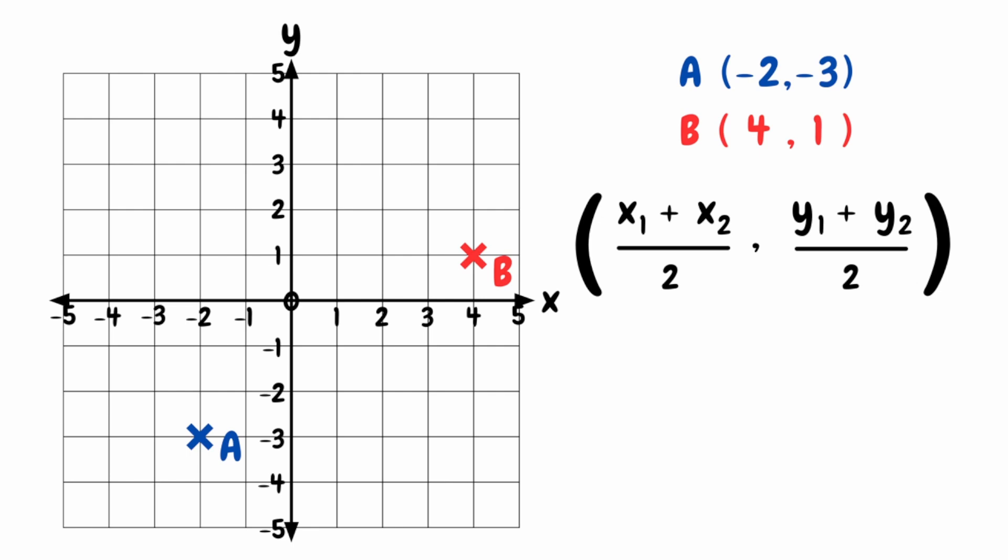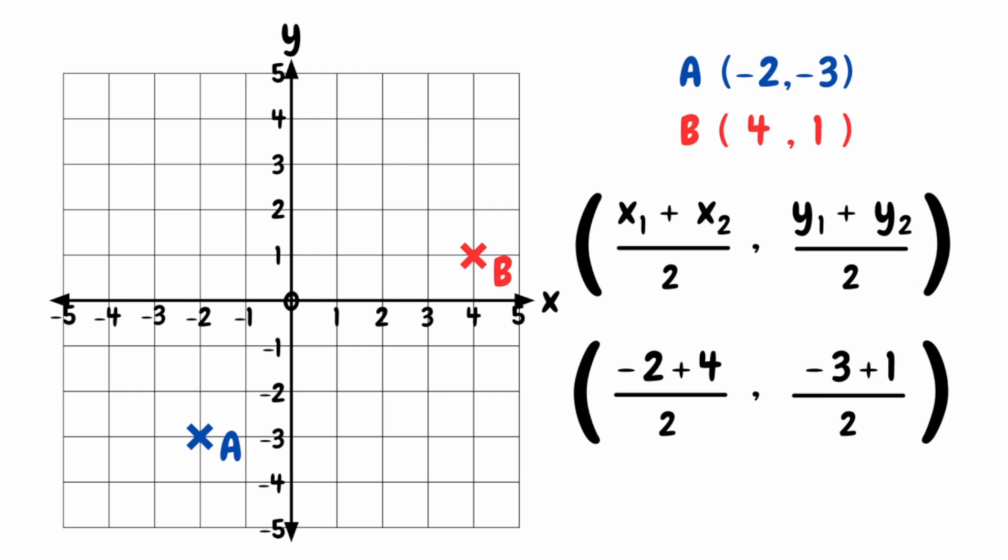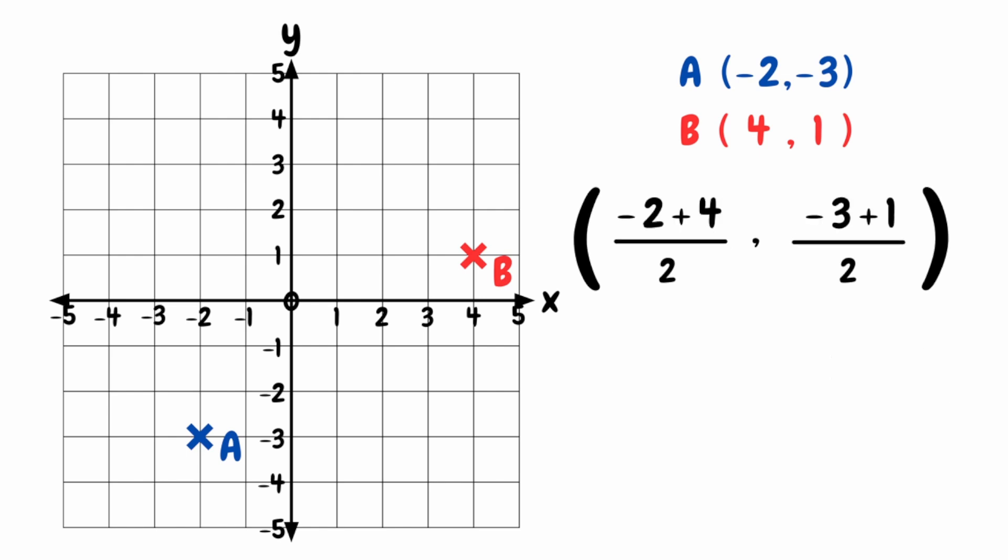So we can now start substituting into our formula. Starting with x1 and x2, these are the x-coordinates from both A and B, which are negative 2 and 4. So we'd be doing negative 2 plus 4, and then we still need to divide that by 2. And then substituting our y1 and y2, they would just be our y-coordinates from A and B, which would be negative 3 and 1.